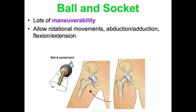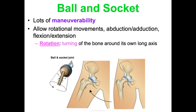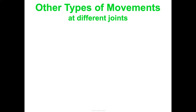Ball-and-socket joints allow the most maneuverability. They permit rotational movement — turning a bone around its own long axis — as well as abduction, adduction, flexion, and extension. Examples of ball-and-socket joints are the shoulder and hip joints.